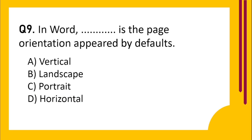Question number 9. In Word, dash is the page orientation that appears by default. Option A: Vertical. Option B: Landscape. Option C: Portrait. Option D: Horizontal. The correct answer is Option C: Portrait.